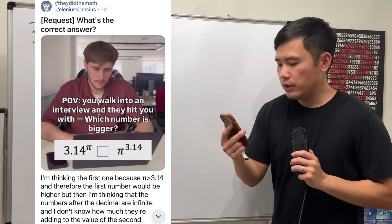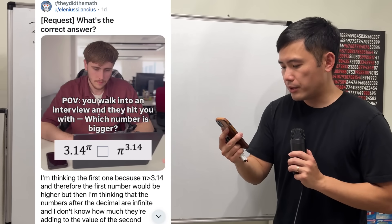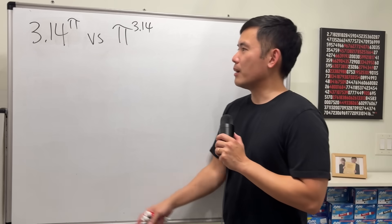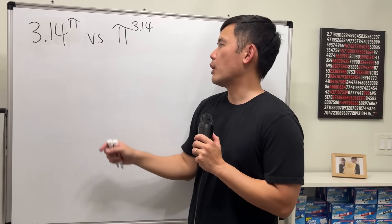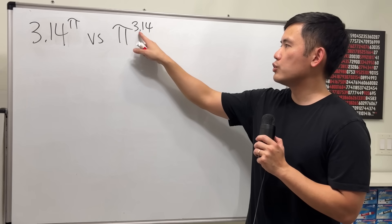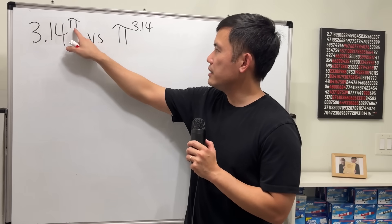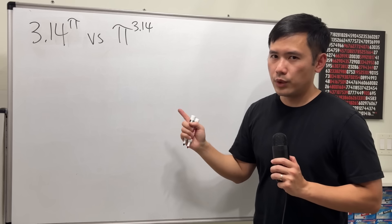POV, you walk into an interview and they hit you with which number is bigger. Okay, let's have a look. Right here we are comparing 3.14 to the π power versus π to the 3.14 power. So we can see that we just switched the base and the exponent. And there's a fast way to do this kind of question.